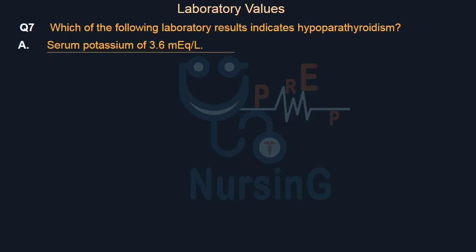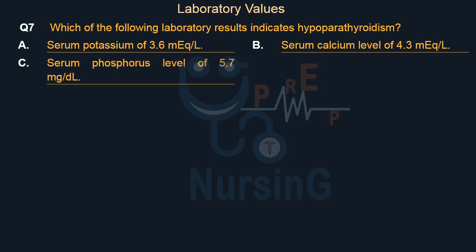Option A: Serum potassium of 3.6 mEq/L. Option B: Serum calcium level of 4.3 mEq/L. Option C: Serum phosphorus level of 5.7 mg/dL. Option D: Serum magnesium level of 1.7 mg/dL.